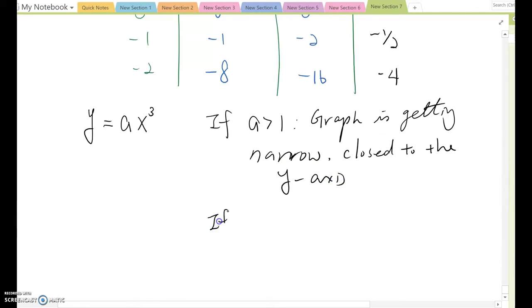So if given coefficient is between 0 and 1, then graph is getting wider.